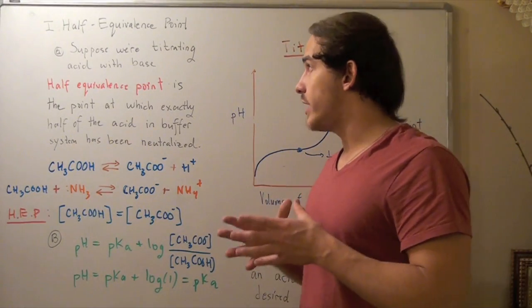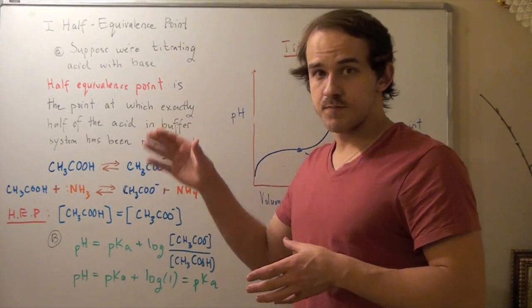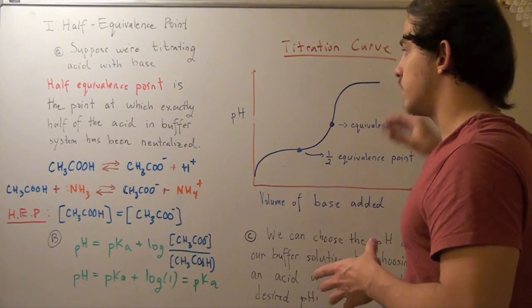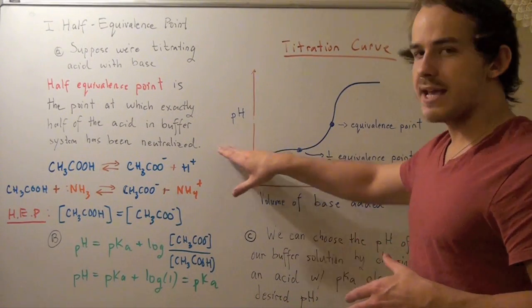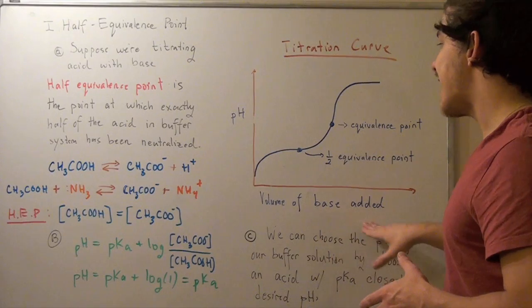So once again, we're titrating an acid with a base. And here's our titration curve, where the y-axis is pH, and the x-axis is the volume of base added.